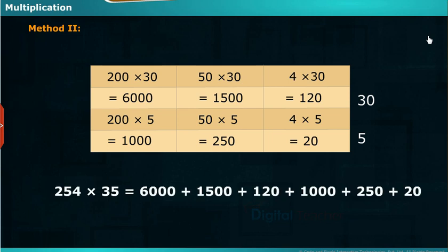That is, 6000 plus 1500 plus 120 plus 1000 plus 250 plus 20. We get the same result as in the previous method. So we can do the multiplication of the numbers in either of the ways.